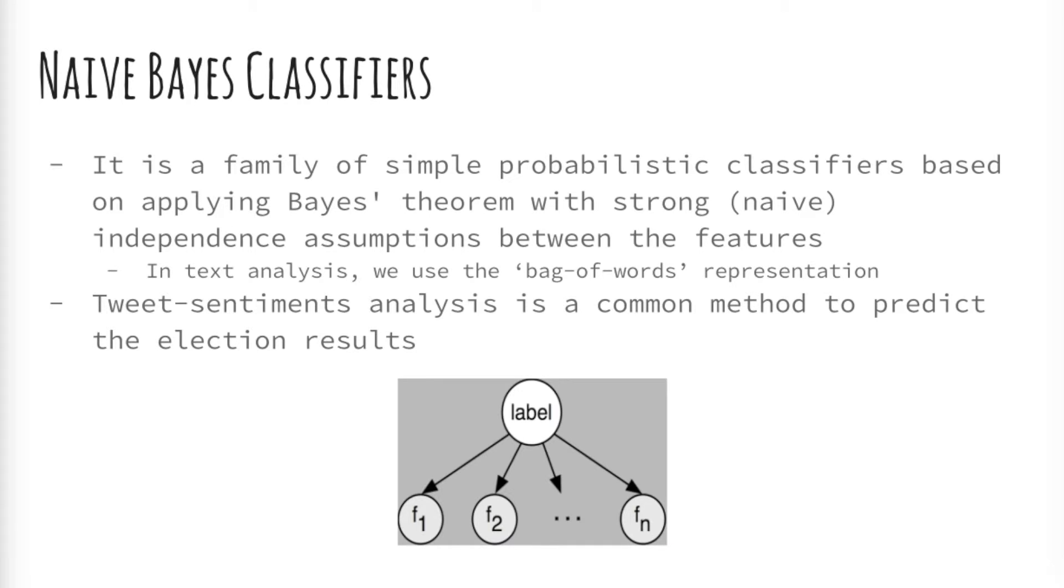Naive Bayes classifiers are a family of simple probabilistic classifiers based on applying Bayes theorem with strong or naive independence assumption between the features. In context of text analysis it is based on bag of words model. With the bag of words model we check which word of the text document appears in a positive words list or a negative words list. If the word appears in a positive words list the total score of the text is updated with plus one, and if the word is in a negative words list the total score is decremented by one. If at the end of the analysis the total score is positive the text is classified as positive, and if it is negative the text is classified as negative.